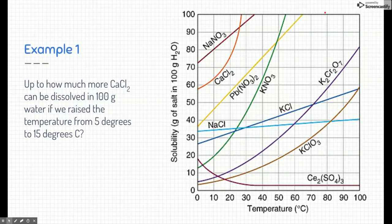I recommend seeing if you could solve this problem. I realize it says example one. This should be example two. But see if you can pause the video and solve this problem. It says up to how much more calcium chloride can be dissolved in 100 grams of water if we raise the temperature from 5 degrees to 15 degrees. Go ahead and pause this video. See if you can figure it out.